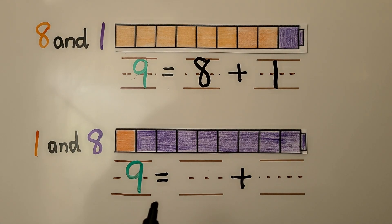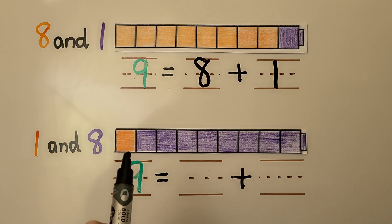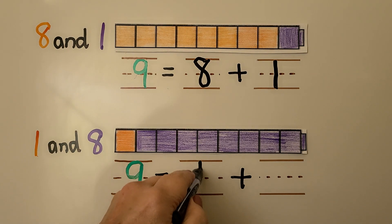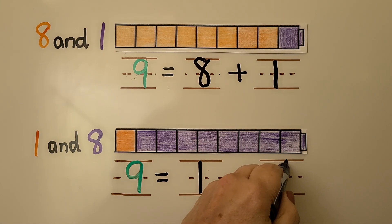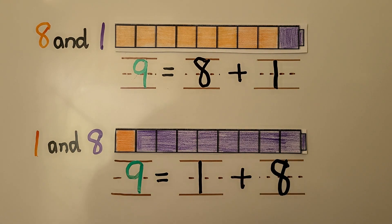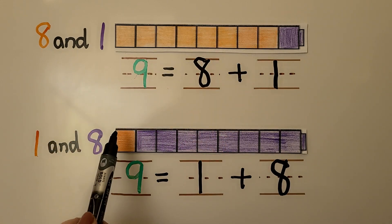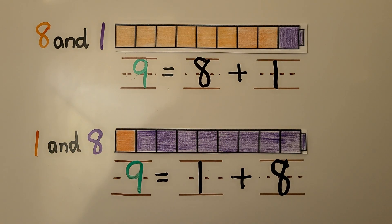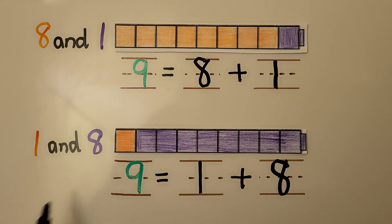Here we have a cube train with nine cubes. In this one we have one orange — we can write the one for the one orange — and we have eight purple. We can switch the colors. We had eight orange and one purple; now we have one orange and eight purple. The order of the number pair doesn't matter. They will be equal to nine when added together. We can use eight and one or one and eight.